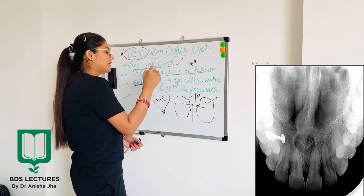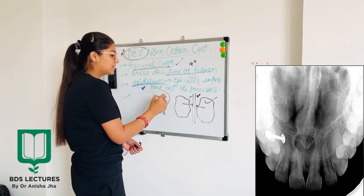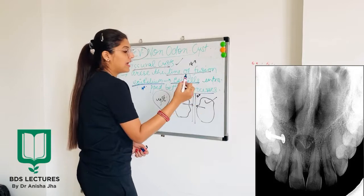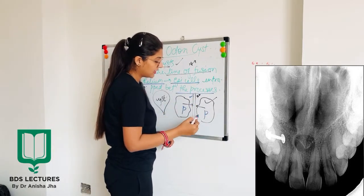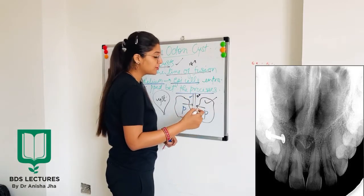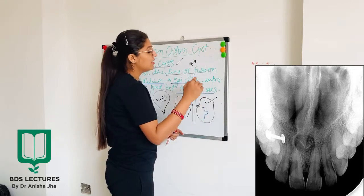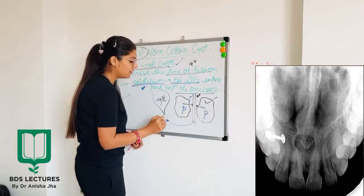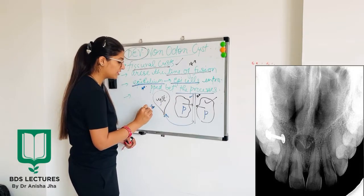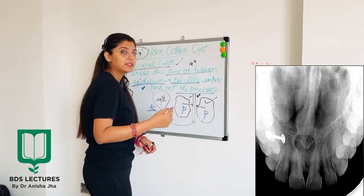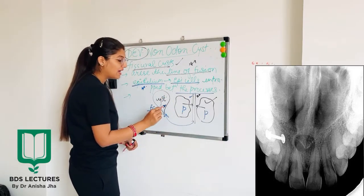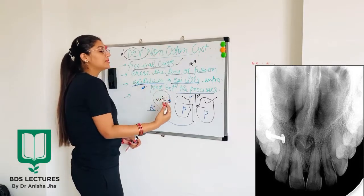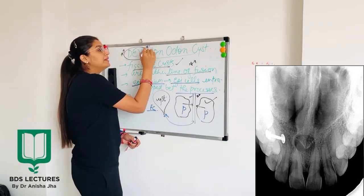The epithelium of the cyst is derived from the epithelial cells entrapped between the processes or bones which fuse together. When fusion occurs, the epithelial lining gets entrapped and a cyst known as a fissural cyst is formed. This cyst will have the epithelial lining derived from the epithelium entrapped between the processes. This was a brief introduction about the developmental non-odontogenic cysts.